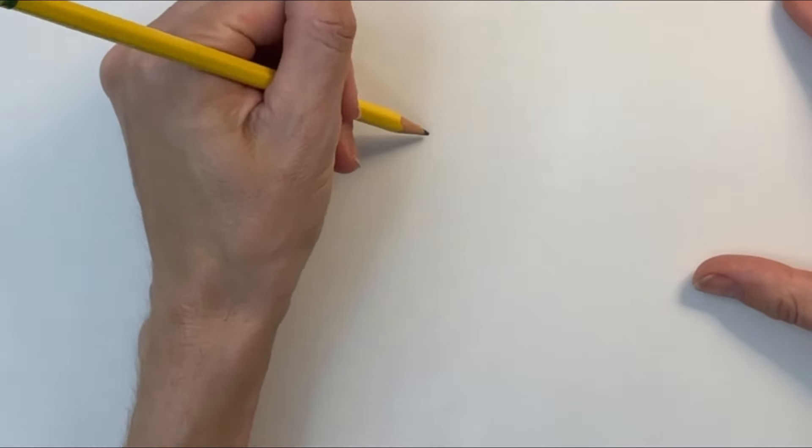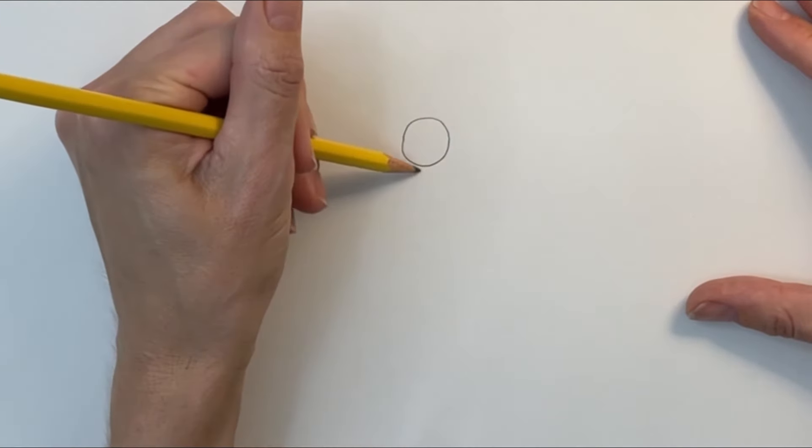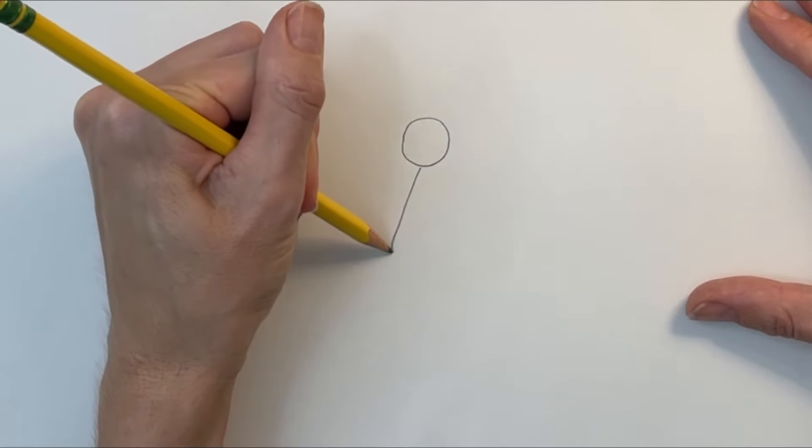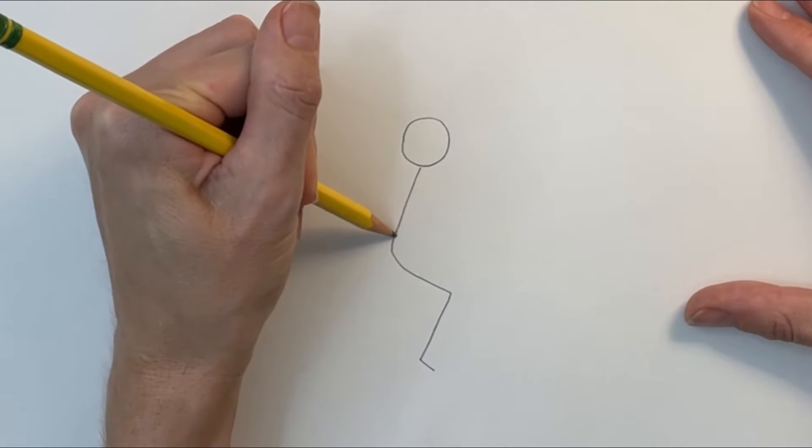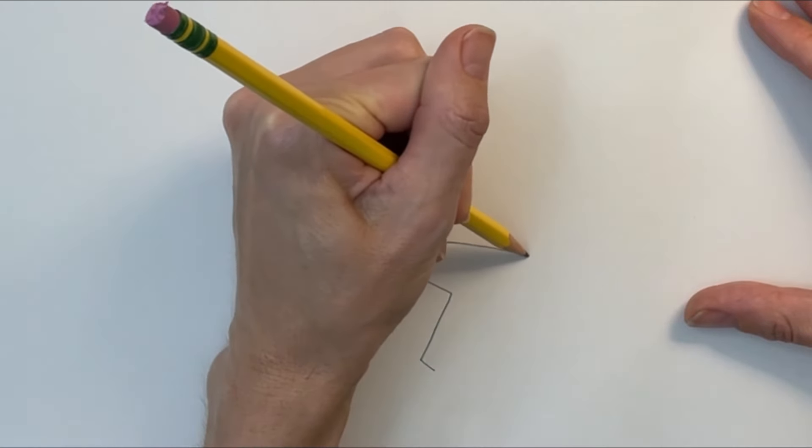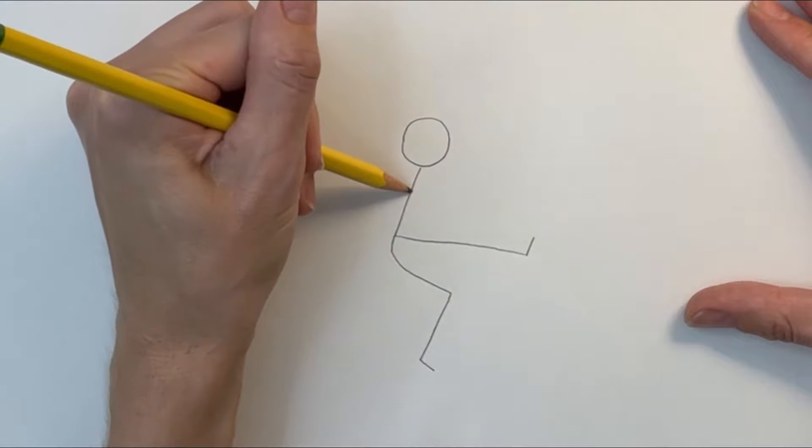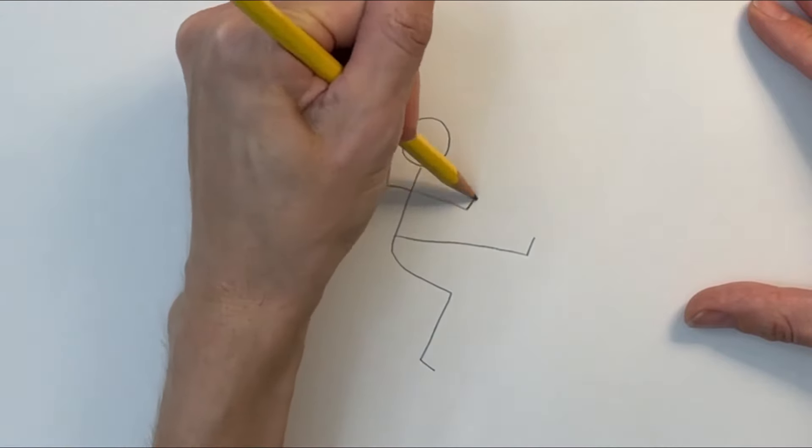To get started, I'm grabbing a large piece of paper and a pencil with an eraser. I'm drawing a circle head and a simple stick figure body. I'm bending the legs and adding a short straight line for the foot. The other leg is going to be sticking straight out the side. The arms are bent and pointing up into the air.